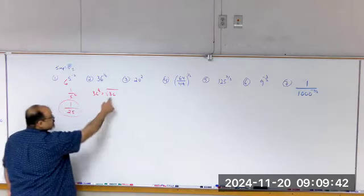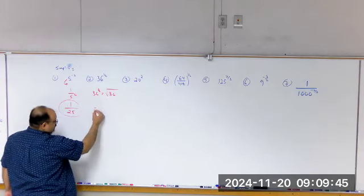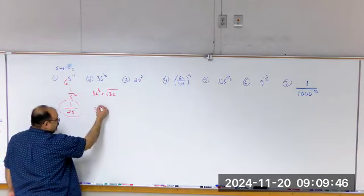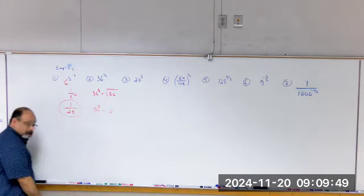So the square root of 36 is 6. So 36 to the one-half is just 6.